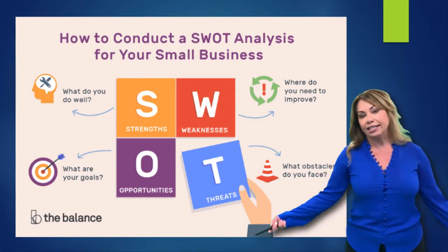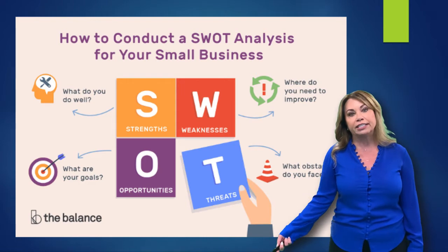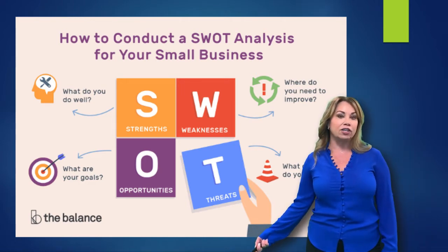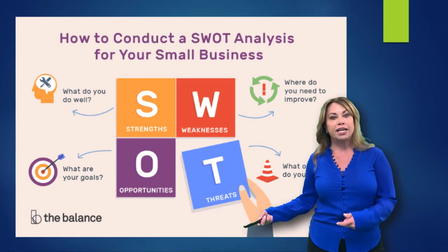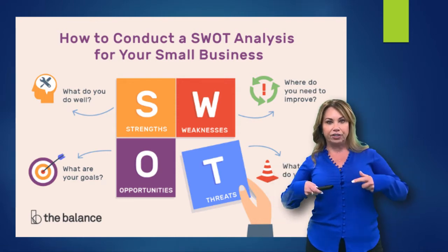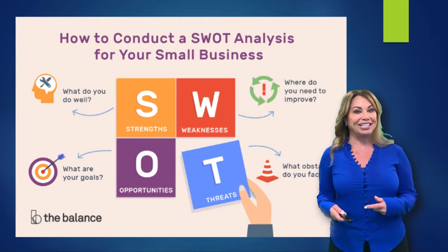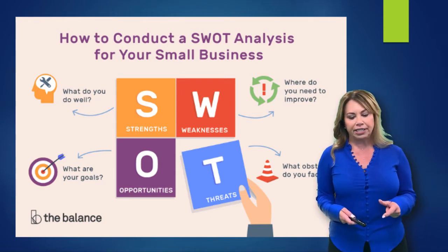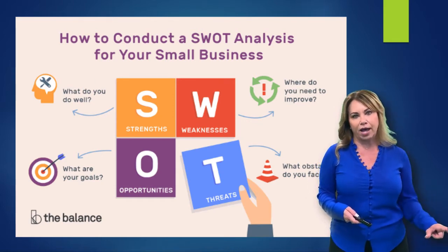What do we mean by strengths? That's going to be things that we do well as a business — internally, what does our organization excel in? Weaknesses are internally things, areas where we need to improve. Now let's shift gears to the external environment or industry in which we operate to take a look at some of the opportunities available to us. We need to make sure that we align those opportunities with our organizational goals as well.